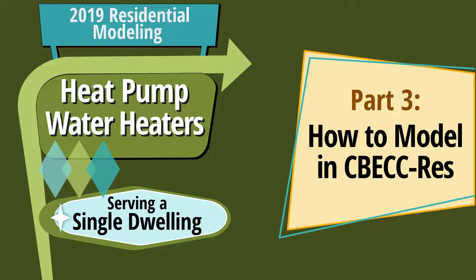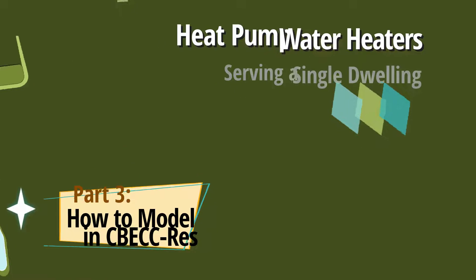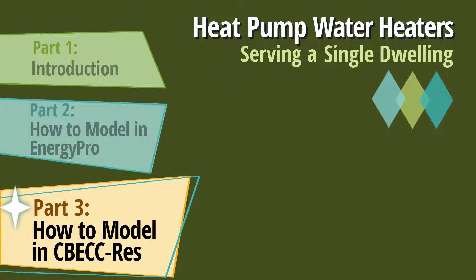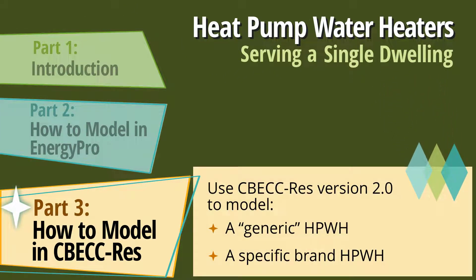Welcome to part three of the residential heat pump water heater series. This three-part series focuses on how to model heat pump water heaters serving a single dwelling for compliance with the 2019 energy code. This includes heat pump water heaters serving single-family buildings as well as individual heat pump water heaters serving low-rise multi-family dwelling units. In this video we will demonstrate how to model a generic heat pump water heater and a specific brand heat pump water heater using Seabec Res version 2.0.